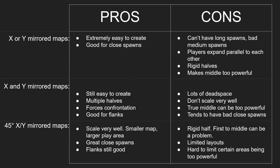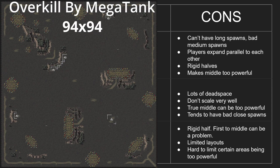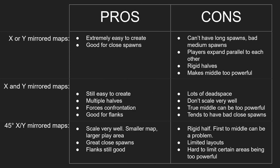The cons of 45-degree split maps: the middle can be a problem — like on Overkill, controlling the bottom half of the map gives a bit too much power. You also have limited layout options because you can't do that yin-yang look; you're not going to expand closer to one opponent than another, just rigid halves. It's also harder to prevent certain areas from being too powerful — corners are a common problem, and if confrontation pushes into those corners and you don't design them right, it becomes very hard to come back once someone takes them.